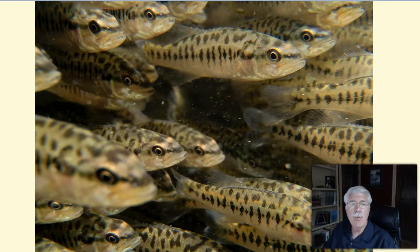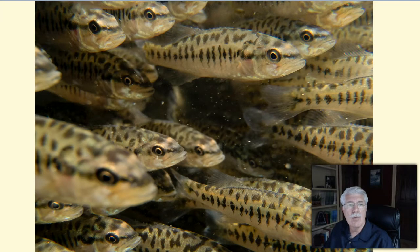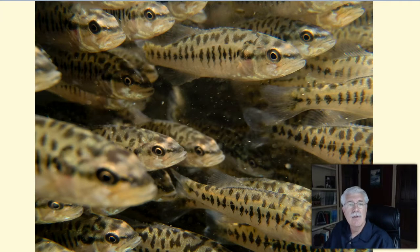Gizzard shad also spawn in shallow water in spring when water temperature reaches about 60 degrees Fahrenheit, but that's about where the similarity with bass ends. To reproduce, gizzard shad males and females school together and release milt and eggs simultaneously near the surface, where the eggs are fertilized. Once fertilized, these eggs become sticky. The eggs are carried away by water currents and slowly sink to the bottom, adhering to underwater objects as they fall. A single female can release as many as 400,000 eggs. These hatch in about four days, and immediately after hatching, the fry form schools and swim off. Gizzard shad don't have any nests and there's no parental involvement.